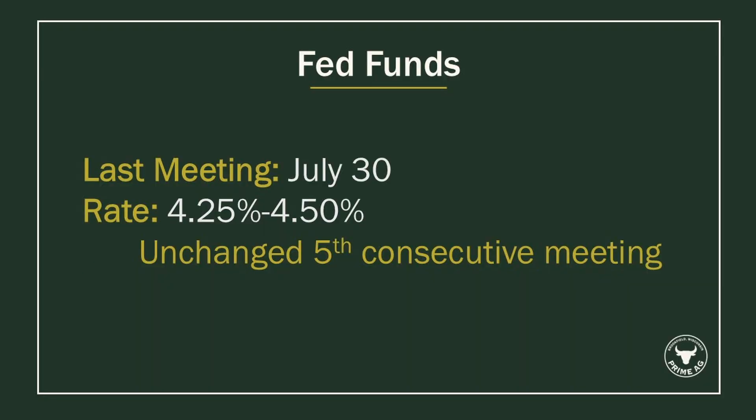That last FOMC meeting was on July 30th and the Fed decided to leave the Fed funds rate unchanged at between four and a quarter to four and a half percent. This is the fifth consecutive meeting they've left it unchanged. Essentially this is just your overnight rate that banks can lend money to each other. Your typical loan documents and rates are based off of the 10-year yield.